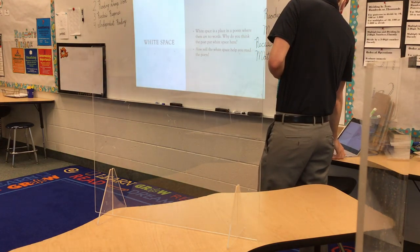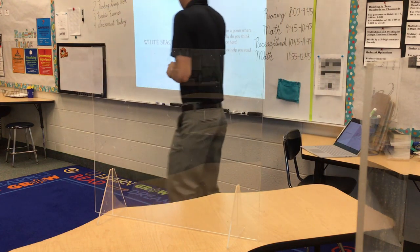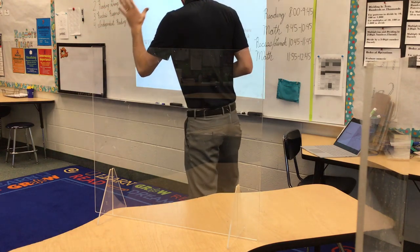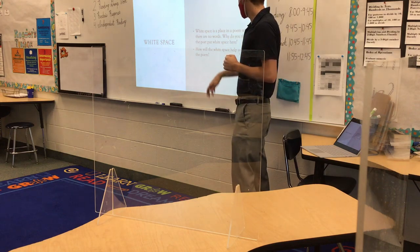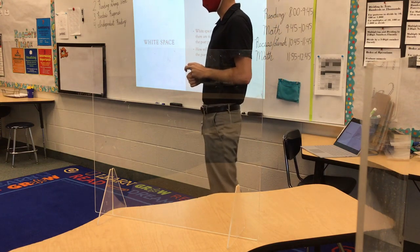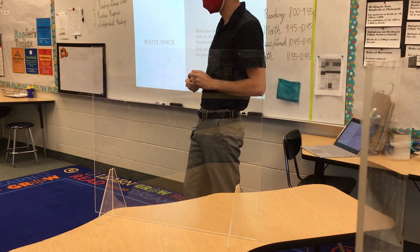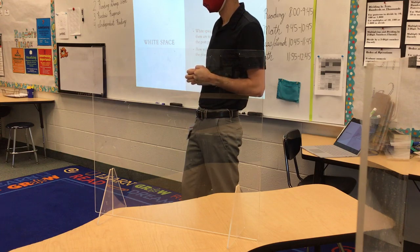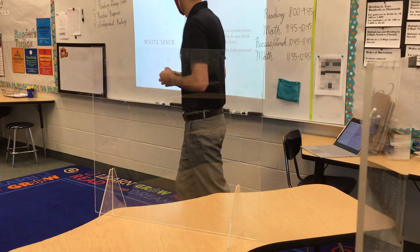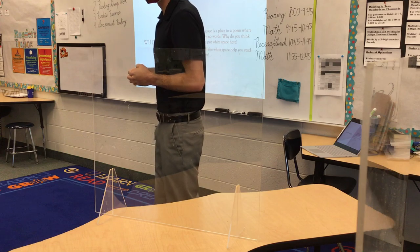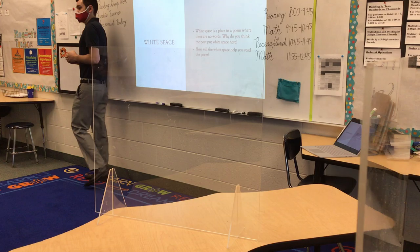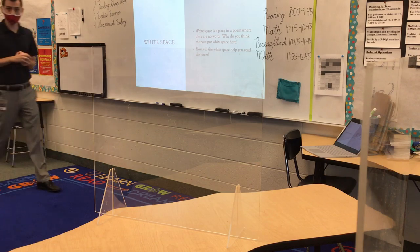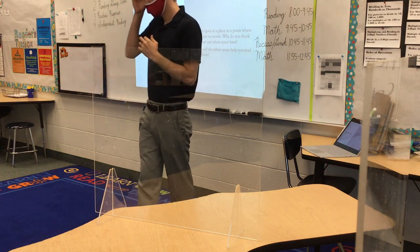So white space. White space is a place in a poem where there are no words. Micah said it's like a blank area — there's nothing there — and he's right. Why do you think the poet would put white space in a poem? What do you think the logic is? Marcos? You're not saving space when you create white space — you're actually taking up more space. So why would I put white space, Daniel? Yeah — you would probably want a longer pause, more of a dramatic feel to the poem.